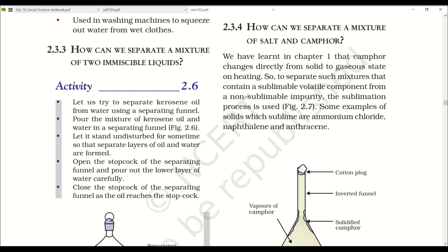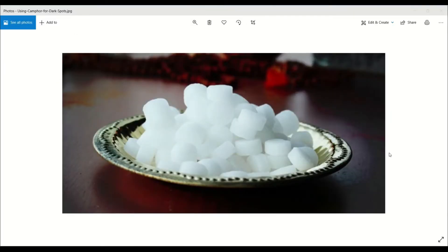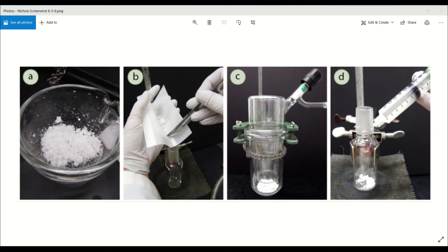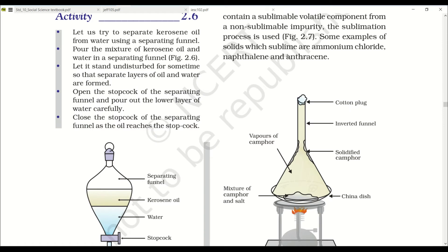How can we separate a mixture of salt and camphor? We have learned camphor changes directly from solid to gaseous state on heating. To separate such mixtures that contain a sublimable volatile component from a non-sublimable component, sublimation process is used. Here you can see camphor that is heated in a beaker and collected in a syringe. Some examples of solids which sublime are ammonium chloride, naphthalene and anthracene.